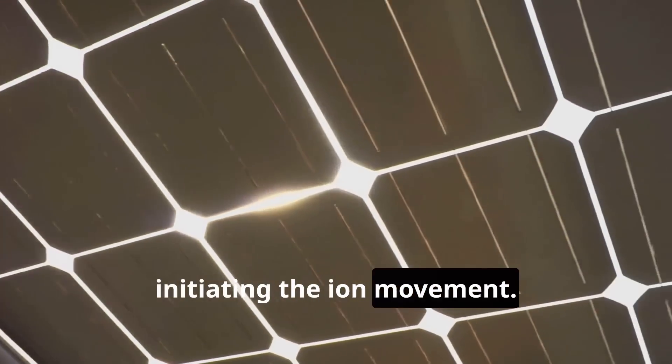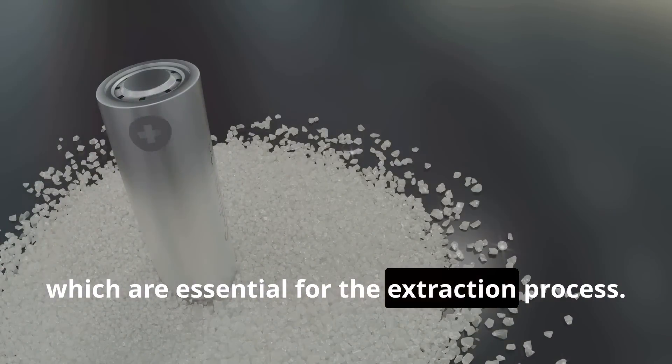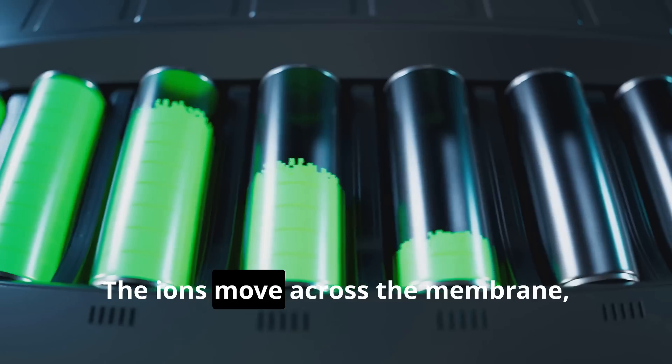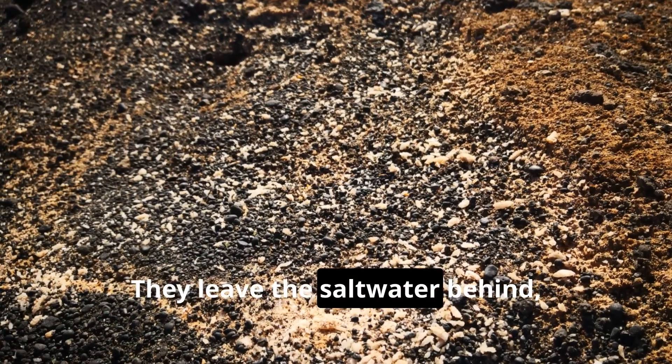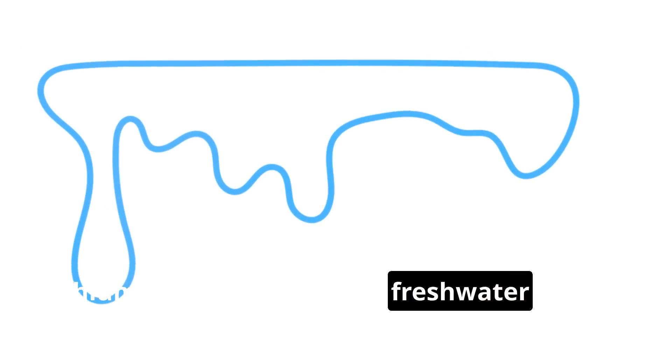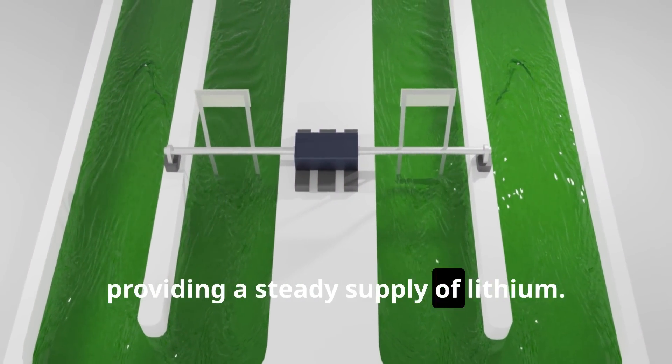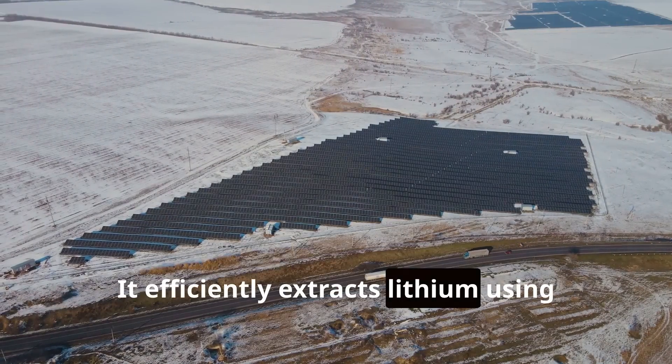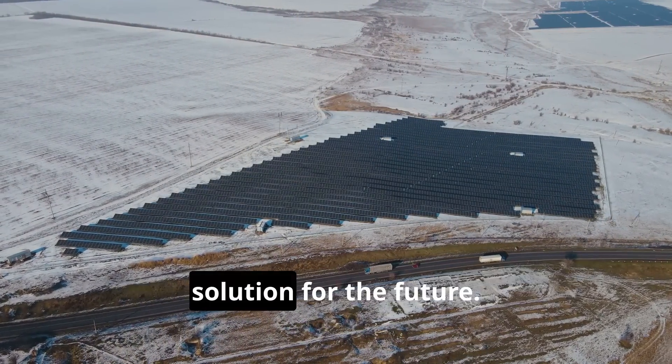Sunlight triggers a reaction in the electrodes, initiating the ion movement. This creates a flow of lithium ions, which are essential for the extraction process. The ions move across the membrane, driven by the energy from the sun. They leave the salt water behind, ensuring a clean separation. Lithium accumulates in the fresh water stream. This process is continuous, providing a steady supply of lithium.